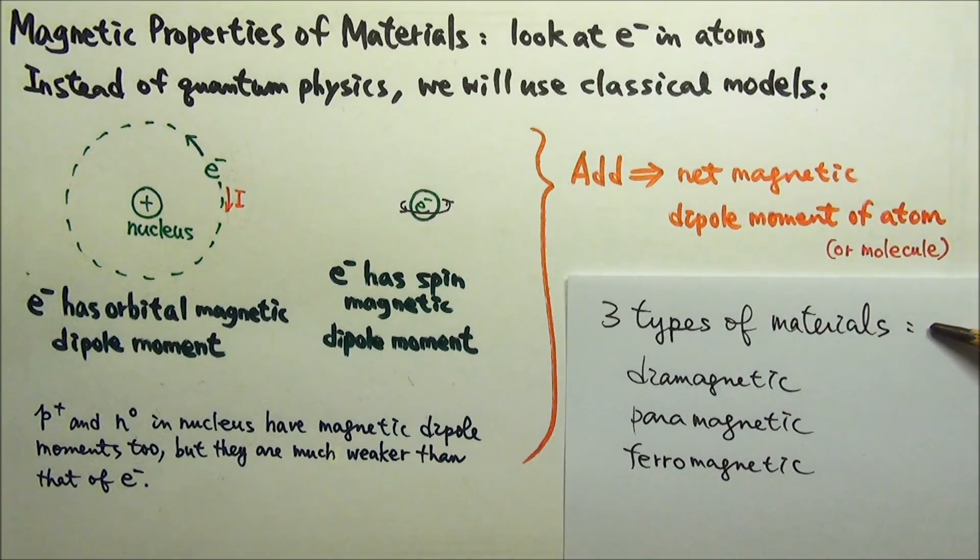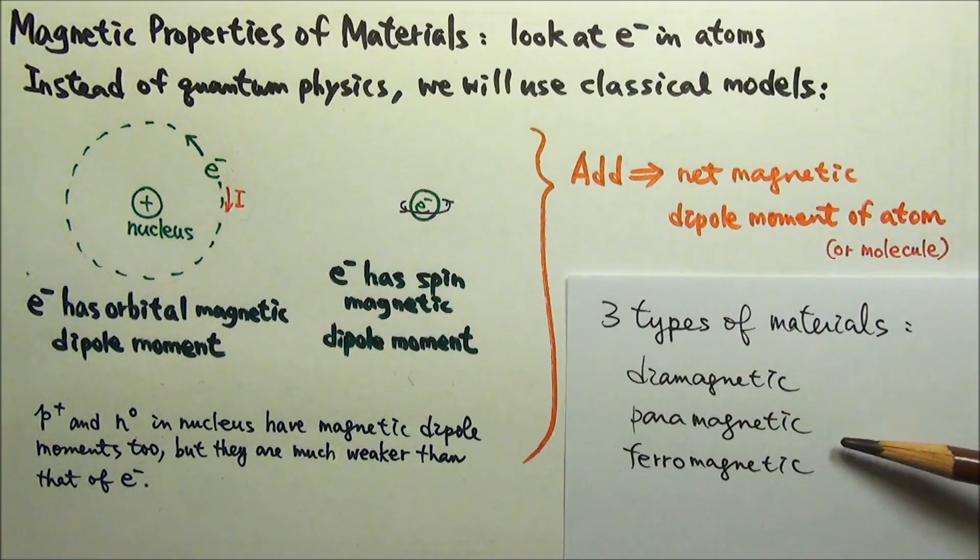We will discuss three types of materials in the next lessons: diamagnetic, paramagnetic, and ferromagnetic.